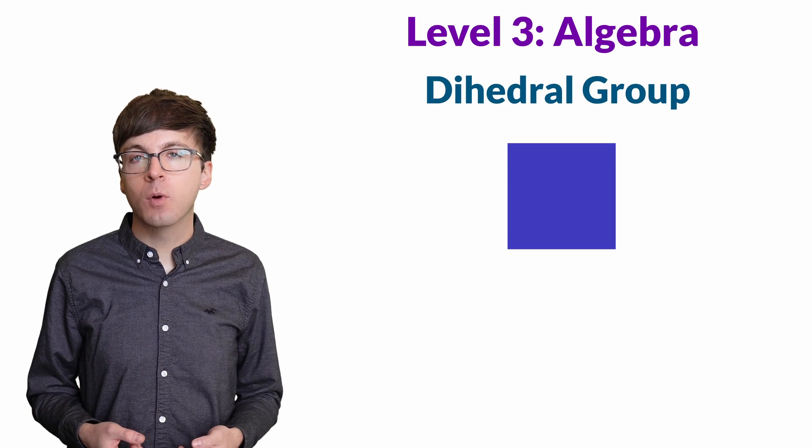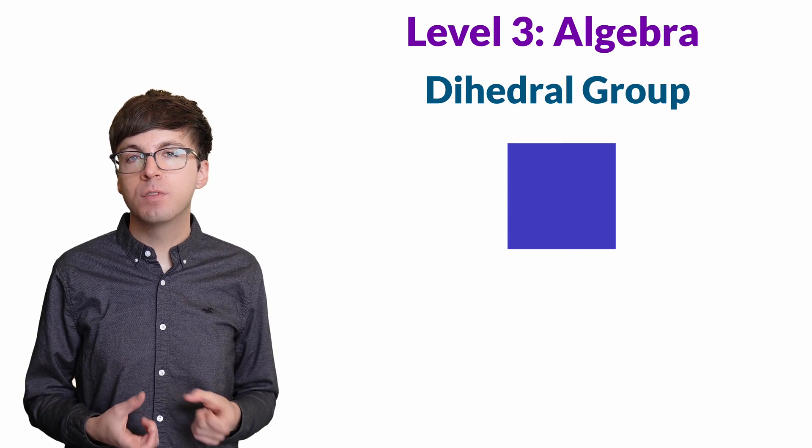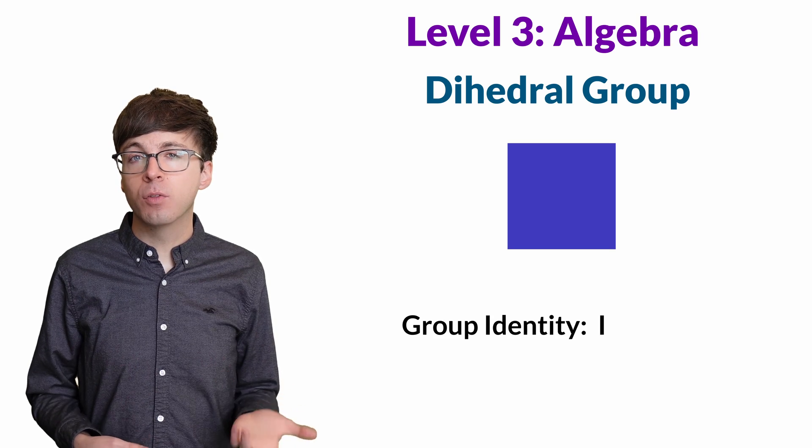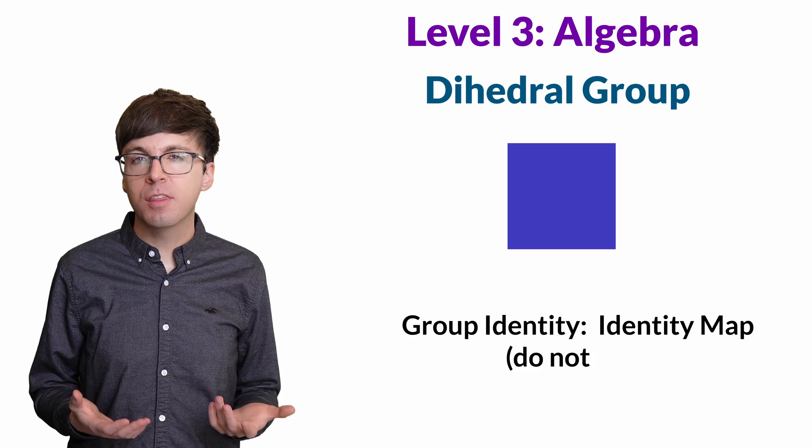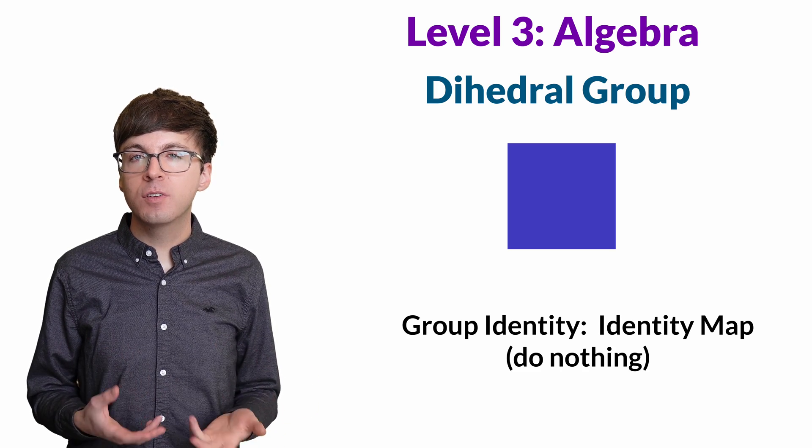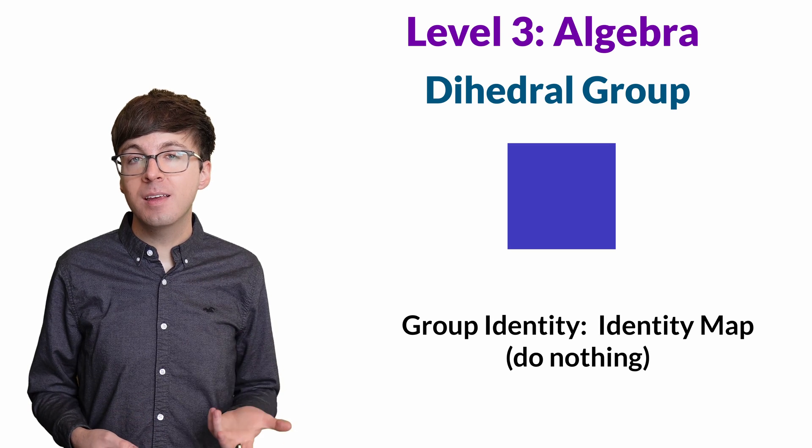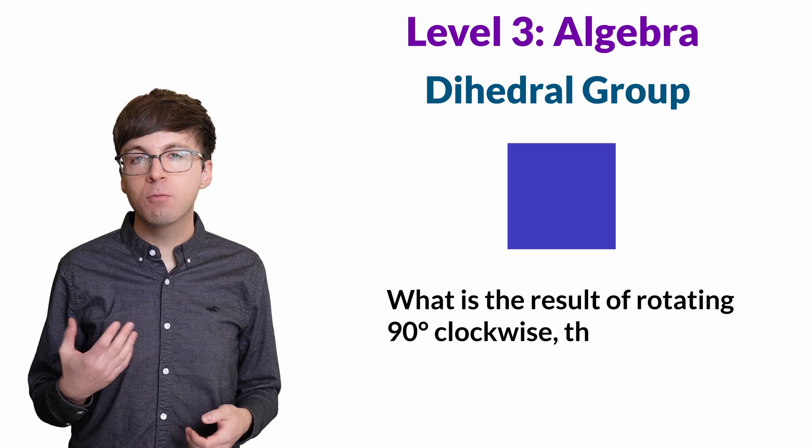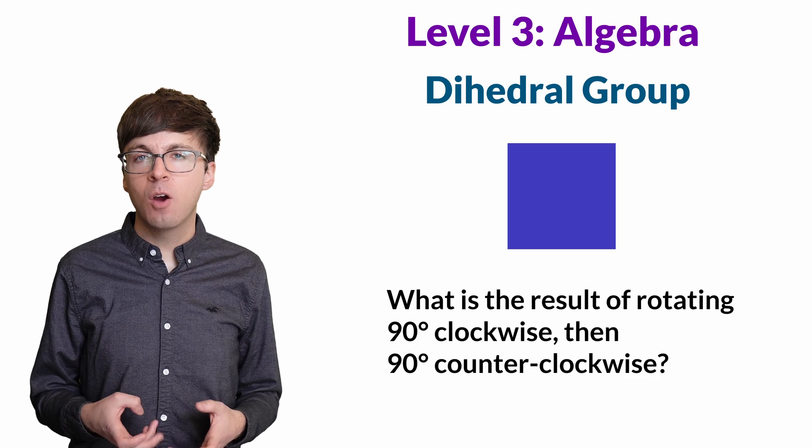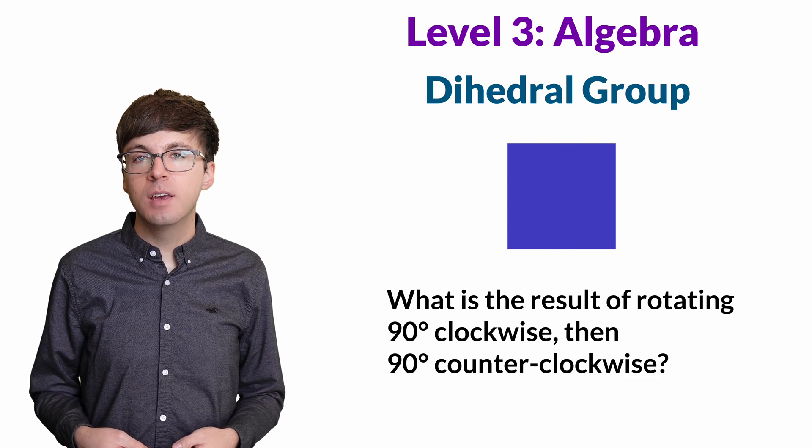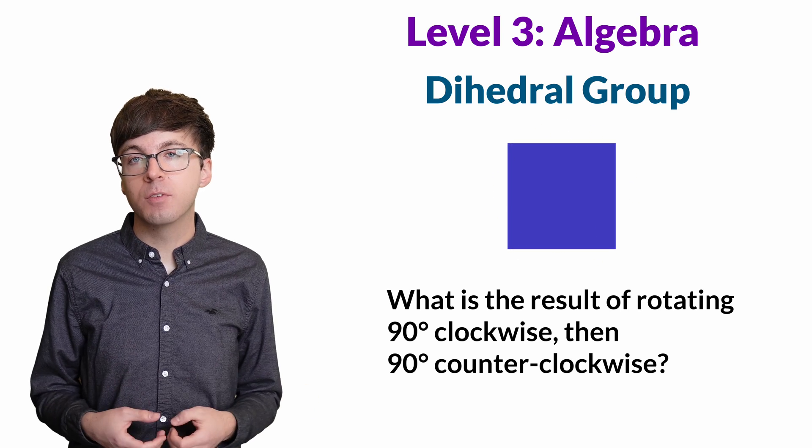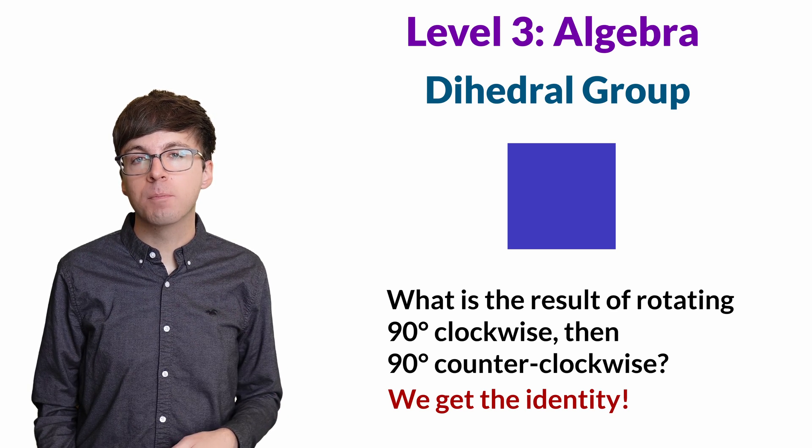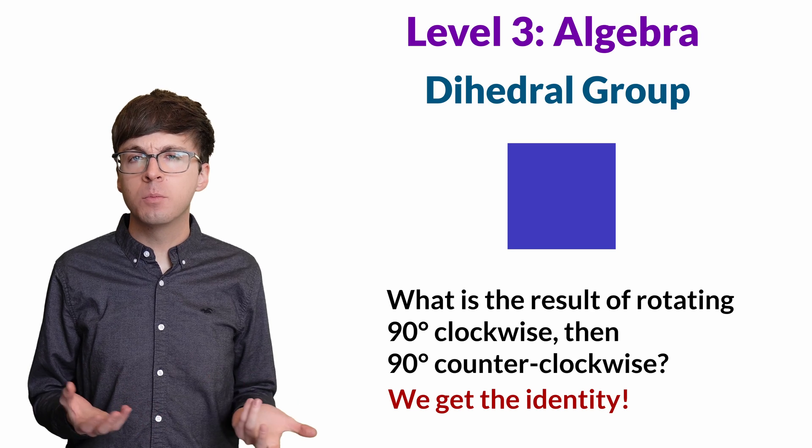Another group is the symmetries of a square. We can perform certain rotations and reflections of a square, and it appears the same as when we started. So what is the additive identity for this group? That's the symmetry of doing nothing to the square. Now it might seem a bit silly at first to consider this as a member of the group, but it's necessary to answer questions like this. If we rotate a square 90 degrees clockwise, and then rotate the square 90 degrees counterclockwise, what is the end result of those two symmetries? These two moves cancel out. They're inverses of each other. So we end up with the additive identity, the symmetry that does nothing to the square. Without the additive identity, we couldn't answer simple questions like this.